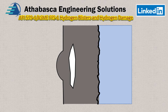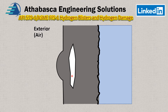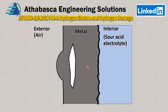On here we have an example of a blister layer on this side of the structure, and over here we have the air or the exterior. In here is an exaggerated void created by hydrogen blistering. Here's our metal interior, our pressure envelope. On the inside is our interior liquid — particular examples are a sour acid electrolyte where there are lots of hydrogen ions in solution. That's an ideal situation to generate hydrogen blistering and hydrogen-related damage.